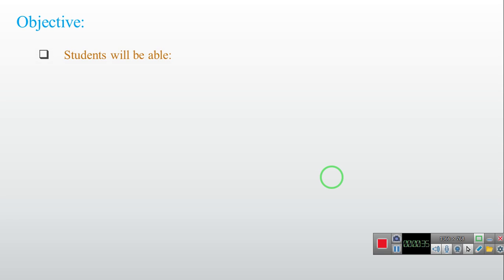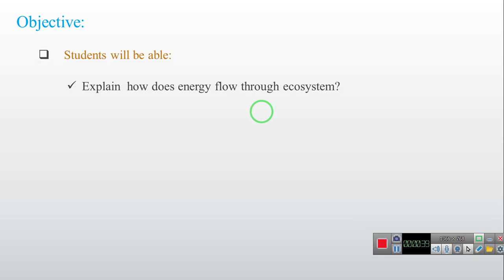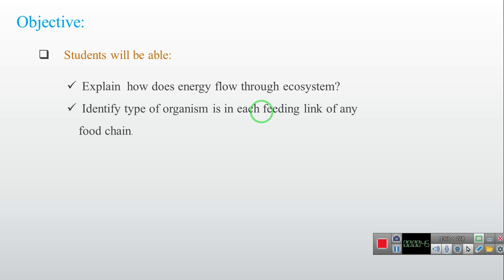After you studied this lesson, you will be able to explain how does the energy flow through the ecosystem, and identify the type of organism in each feeding link of any food chain.